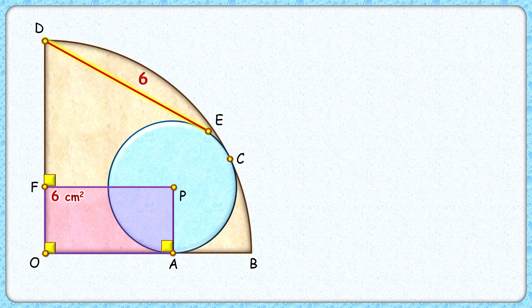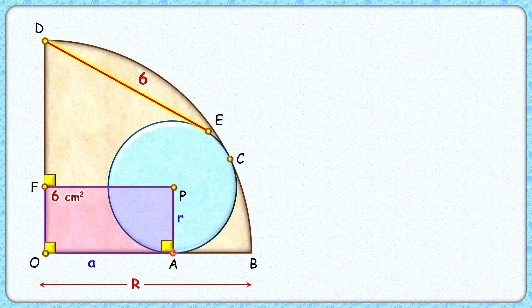Let's check this elegant solution. Let's start by assuming the radius of the quadrant as capital R, the circle radius as small r, and the length of the rectangle as 'a' centimeters.